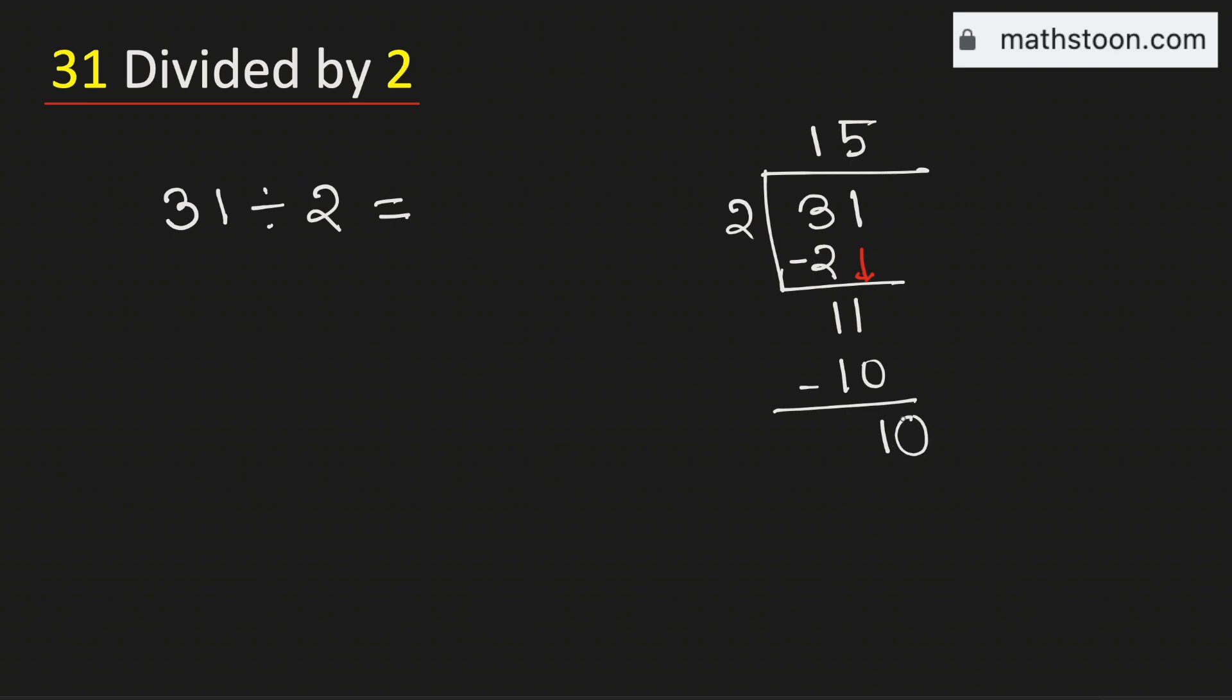So we will borrow a 0, and for that we need to put a decimal here. Now 2 times 5 is 10. Subtract, we get 0.